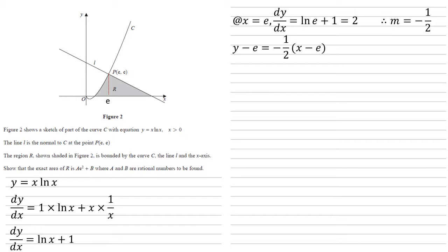We want to find out where it crosses the x-axis. So setting y equal to zero, we get that minus e equals minus a half times x minus e. Multiplying both sides by negative two, we get 2e equals x minus e. So x is equal to 3e. This is the point where the line crosses the x-axis.